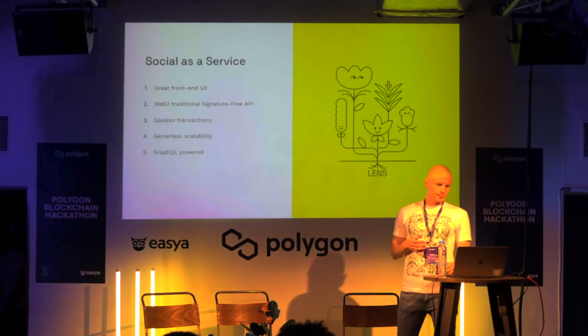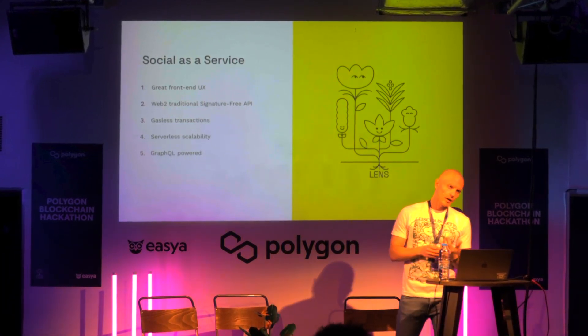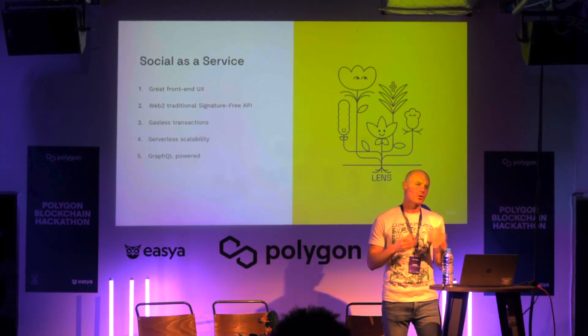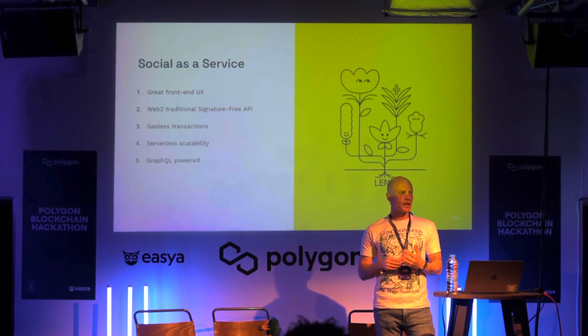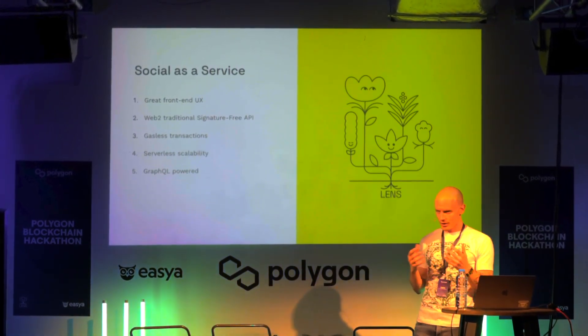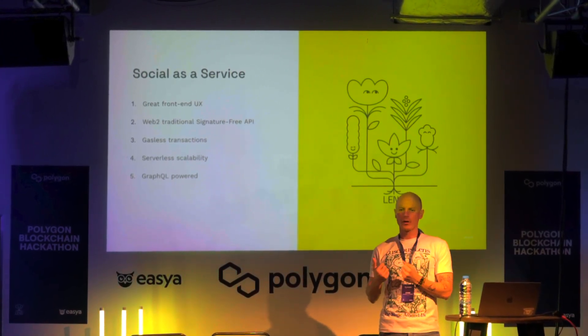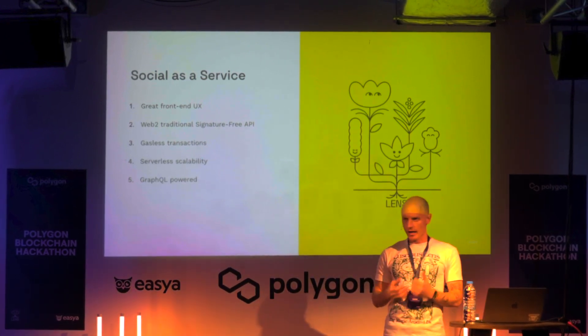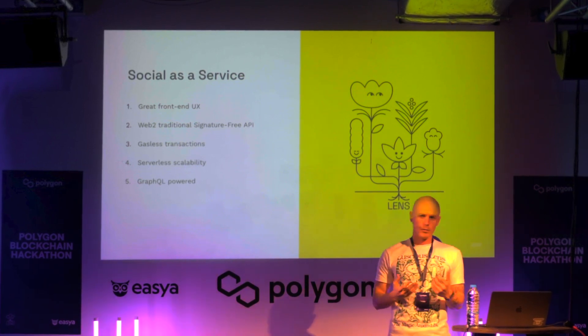We are only three months old. Right now we are still in private beta, but after this I will help you create your profile — you can claim a handle like yourname.lens; mine is fabricio.lens. In terms of architecture, you can think of this as social-as-a-service. We are pushing hard on having great front ends because the protocol is great, but we need great social media apps built on Lens. Great social media apps are not only about hacking — it's design, it's UX, it's thinking about the end user.